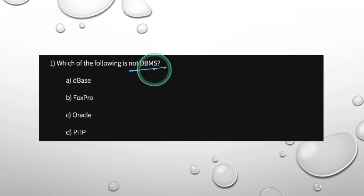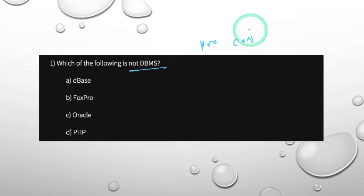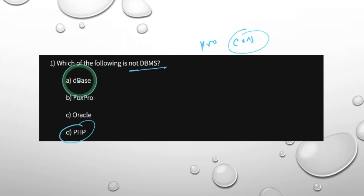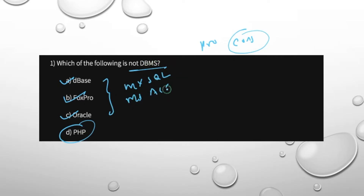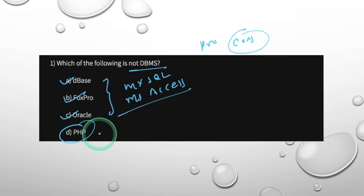The definition of DBMS is discussed. For example, the options are: PHP, DBS, FoxPro, Oracle, or MySQL. These are frequently used examples of DBMS. PHP is a server-side language — not a DBMS.